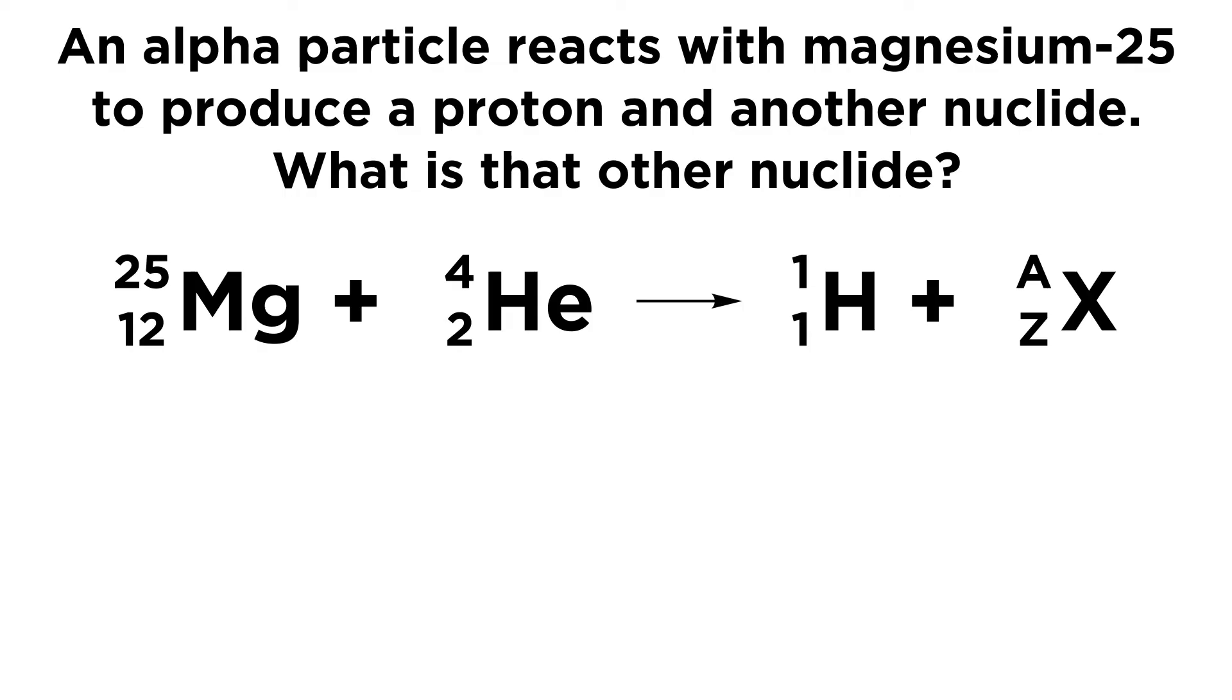and since there is one proton in the nucleus, that's an atomic number of 1, we're going to put a 1 on the bottom left, and since it's just one proton, it's just one atomic mass unit, so we have a mass number of 1, and we can put a 1 on the top left as well.